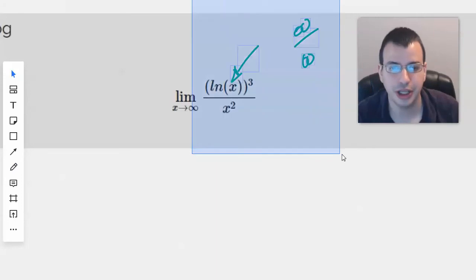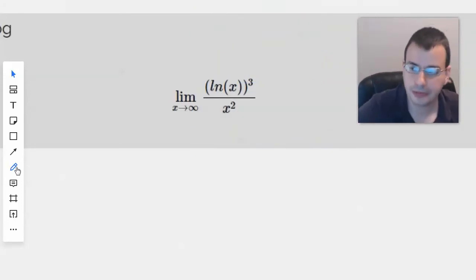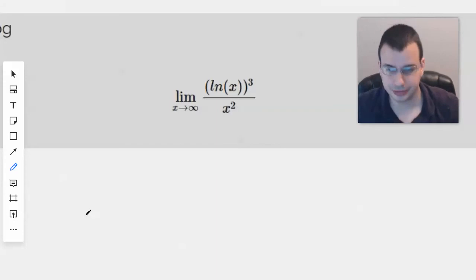L'Hopital's rule is when you have an indeterminate form, you take a derivative at the top, take a derivative at the bottom, and that will take it to the same limit as before and give you an answer.